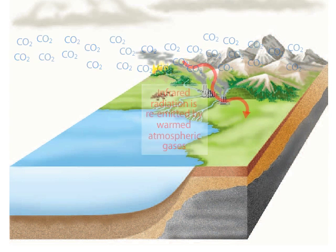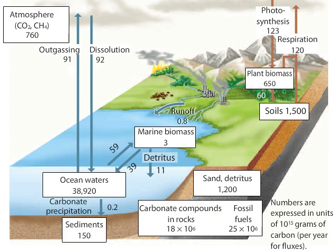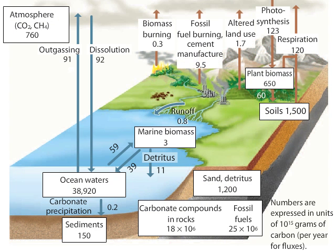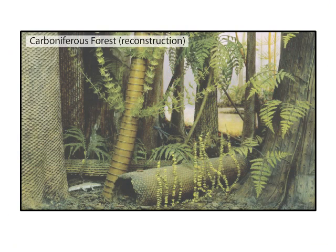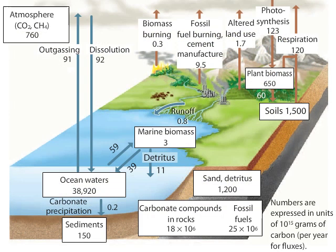Human activities influence the carbon cycle in a number of ways. Deforestation, changes in land use, and the burning of fossil fuels increase the atmospheric pool of carbon dioxide. The carbon released from burning fossil fuels comes from plants that lived hundreds of millions of years ago, such as those in a Carboniferous forest, which transformed into coal, and oceanic plankton, which transformed into petroleum and natural gas.